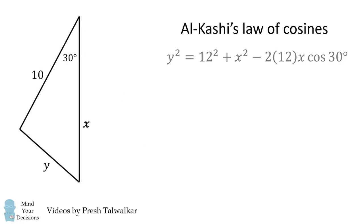We'll do a similar thing for this triangle, and we get y squared is equal to 10 squared plus x squared minus 2 times 10 times x times cosine of 30 degrees.